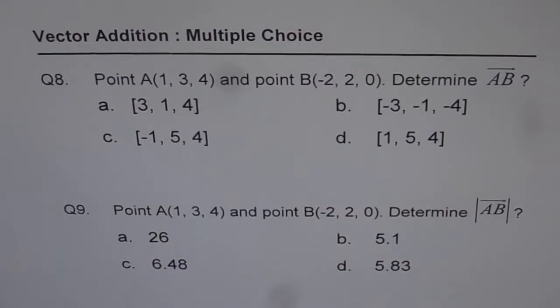Here are question number 8 and 9 on vectors. Point A(1, 3, 4) and point B(-2, 2, 0) is given to us.